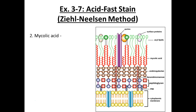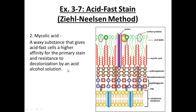So why do they have this particular staining ability? If you were to stain them using the gram stain, notice they have a layer of peptidoglycan and no outer membrane, so they would come out gram positive — they'd come out purple. But in addition to the peptidoglycan layer, notice that they have these mycolic acids, and these are waxy-like substances. This is why they have such a strong affinity to the carbolfuchsin dye.